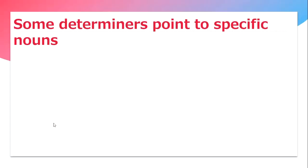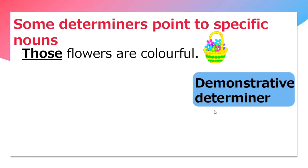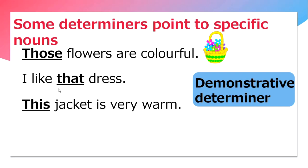There are certain determiners that point to specific nouns. For example, those flowers are colorful — this is an example of a demonstrative determiner. I like that dress. 'That' points to a specific dress, and hence it is a demonstrative determiner. This jacket is very warm. Here, 'this' is a demonstrative determiner as it is pointing to a specific jacket.